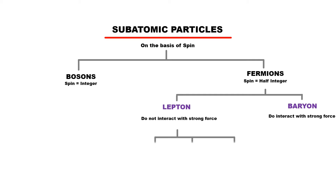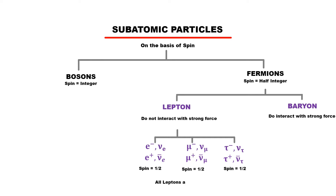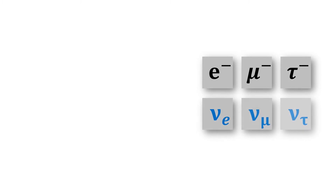Six lepton particles have been discovered so far: electron, muon, tau, and three neutrino particles associated with all three. All these lepton particles also have six anti-lepton particles. Leptons are fundamental spin-half particles — they are elementary particles, meaning they are not made up of any other particles. Leptons can be divided into two categories: charged leptons and neutral leptons.